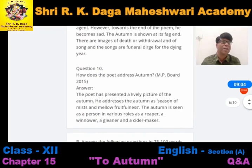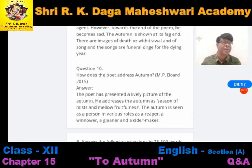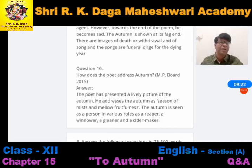How does the poet address the autumn? The poet has presented a lively picture of autumn. He says 'the season of mist and mellow fruitfulness.' He presents autumn as the reaper, the winnower, the gleaner, and the cider maker — representing it in various forms.